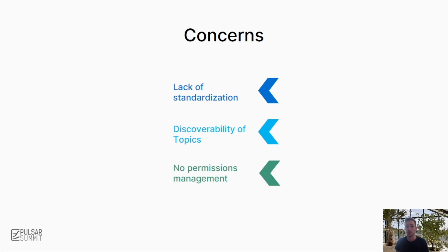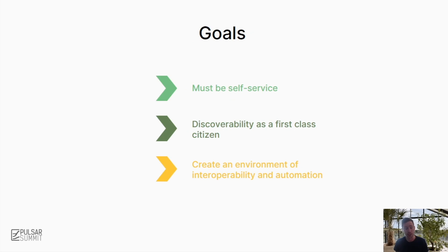We found that Pulsar gave users way too much control. Anyone could write to any topic and there were no standards for naming them. We needed a way to bring order to the chaos and regain control of our event streaming infrastructure. Our main challenge was the lack of standardization and control. We knew we wanted to enforce standards for naming, control permissions so that only authorized users could access certain topics, and ensure discoverability so that users could easily find what is there. It was also extremely important that we maintain self-service control from the user's point of view.